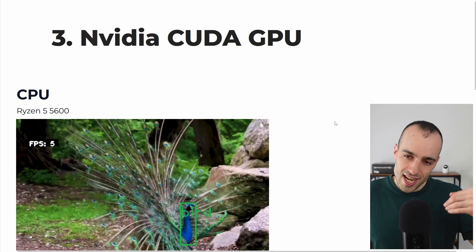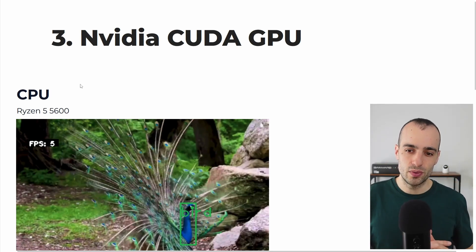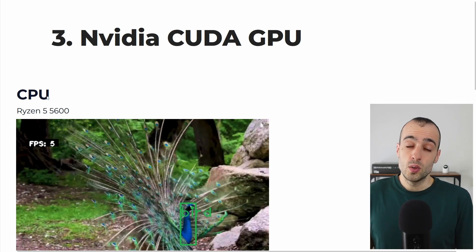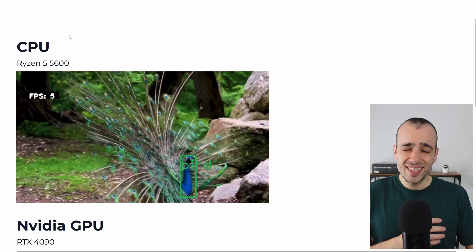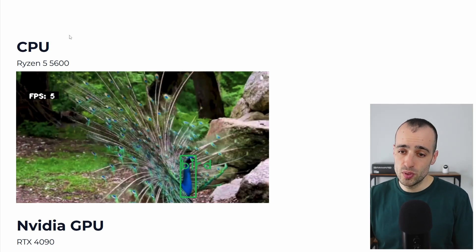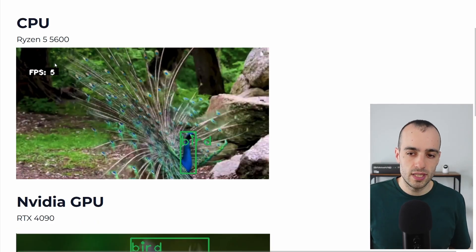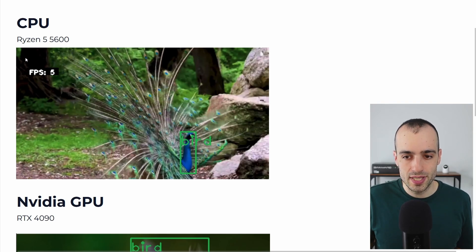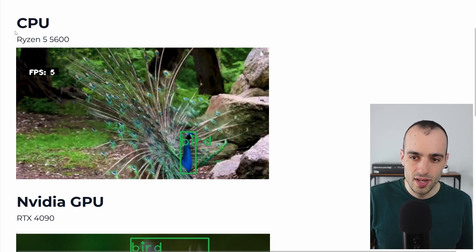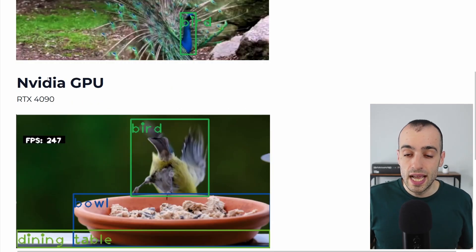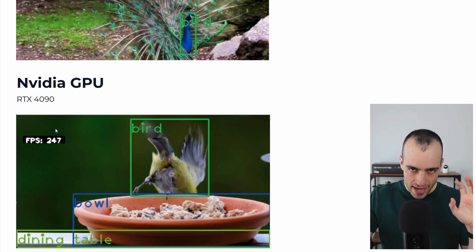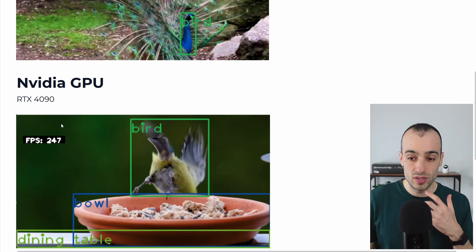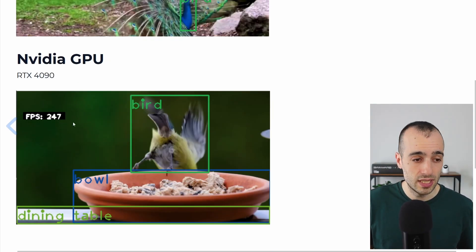We have two main options to run the model: on the CPU or the GPU. There is a huge difference — with a CPU, even a good one like a Ryzen 5 5600, you may get only around 5 frames per second. With a GPU you can get 100 frames per second — at least a 30x speed increase. And if we optimize the model on top of using the GPU, we get even much more than that.